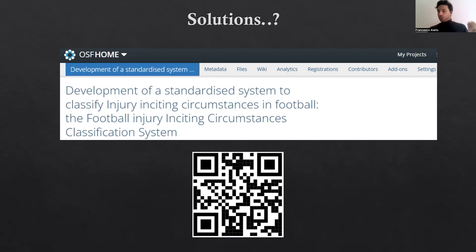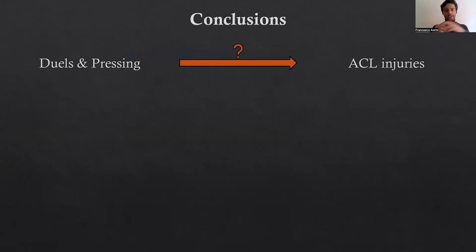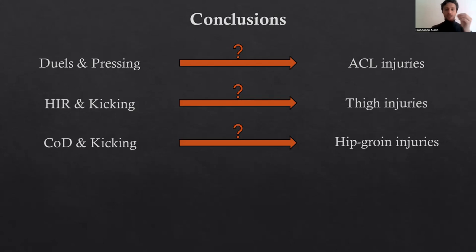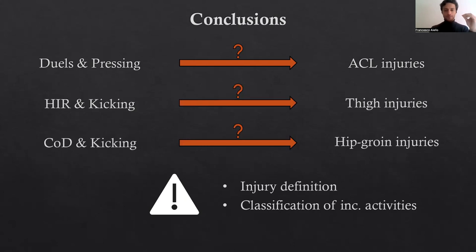In conclusion, for ACL injuries it seems that duels and pressing might be the most prevalent activities. High intensity running and kicking seem to be the most prevalent activities leading to thigh injuries. There were important methodological limitations in the studies, the main ones being the different injury definitions and the different classification of inciting activities.